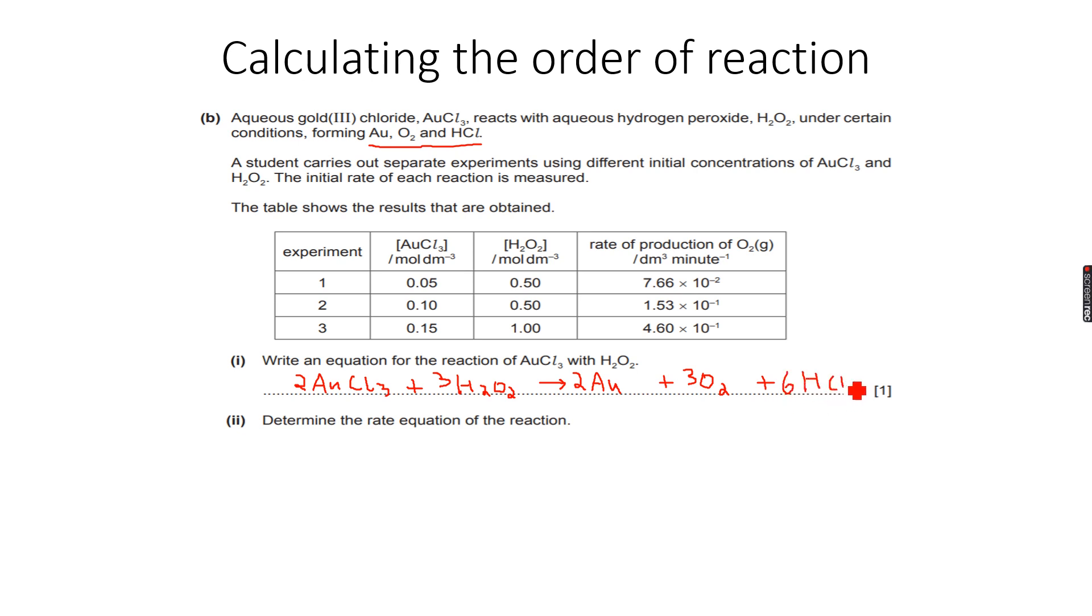You can see that this equation is balanced: 2 gold atoms on each side, 6 chlorine total on each side, 6 hydrogen total on each side, 6 oxygen total on each side. So we have made a balanced equation for this reaction.